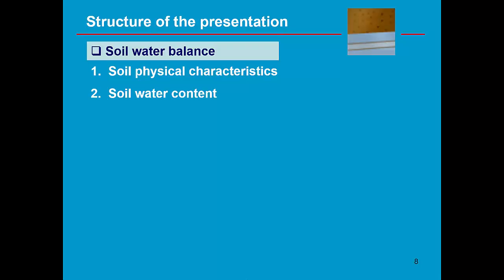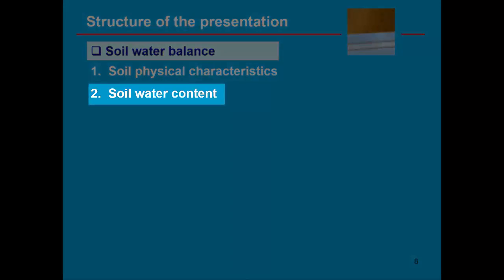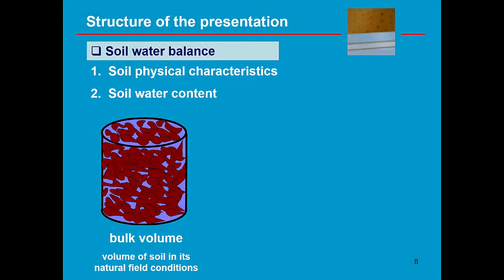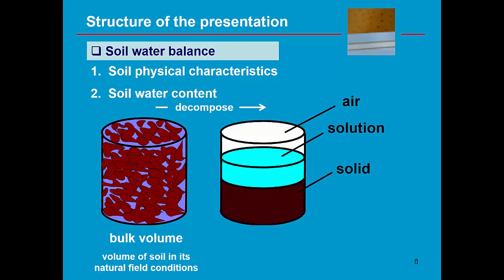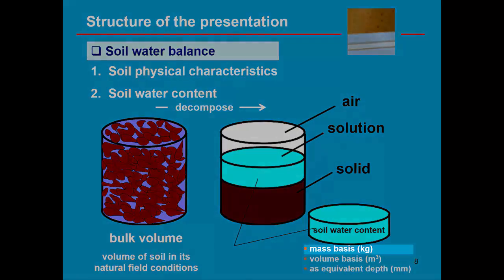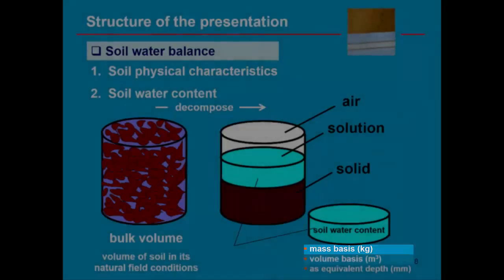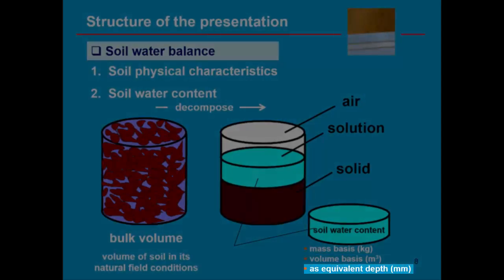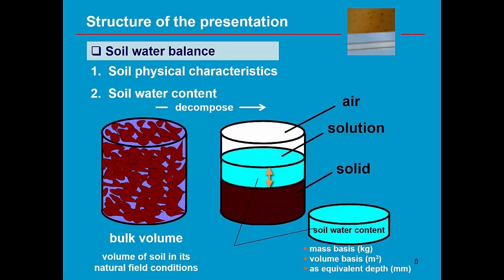In this part of the training module we focus on the expression of the soil water content. We have a soil sample in which there is a certain amount of water. If we decompose the soil sample by compacting all the solid particles into one solid block, the water which was in the soil pores will settle above it. The amount of water in the soil sample can be expressed on a mass basis, on a volume basis, or as an equivalent depth — the thickness of the water layer which has settled above the solid mass.